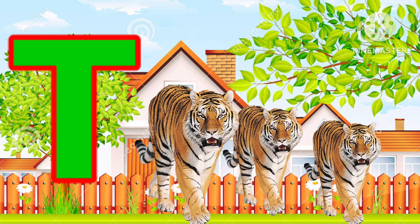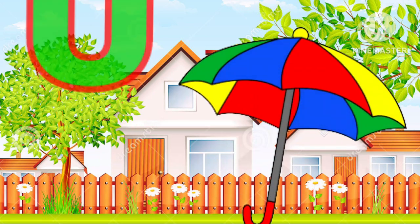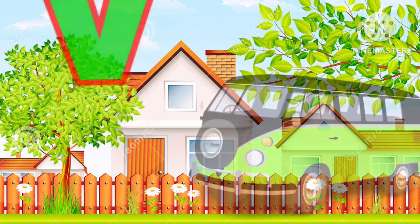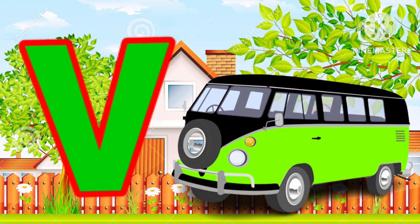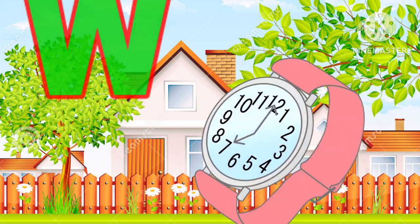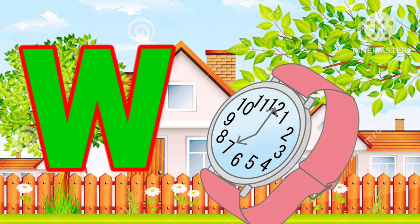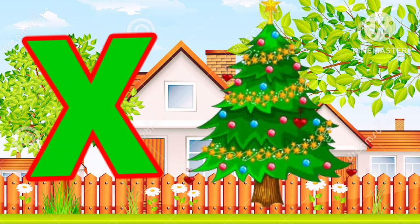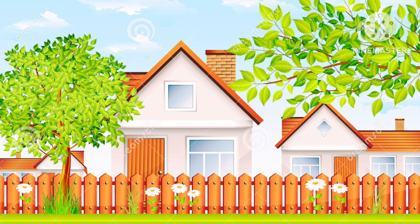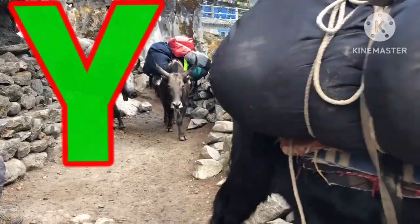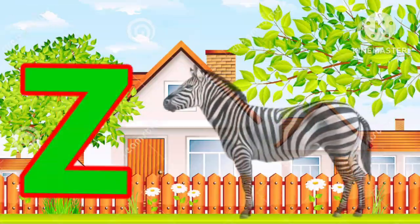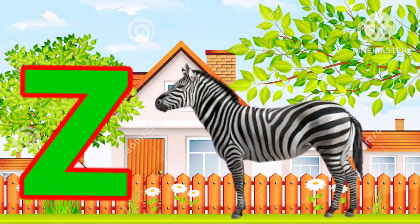T for tiger, U for umbrella, B for lamp, W for watch, X for atmosphere, Y for yard, Z for zebra.